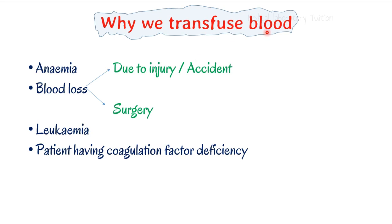Why do we transfuse blood? In case of anemia, where the patient has a low amount of hemoglobin; in case of blood loss due to injury or accident, we have to compensate for the blood that is lost. Similarly, in case of surgery, we can also transfuse blood.